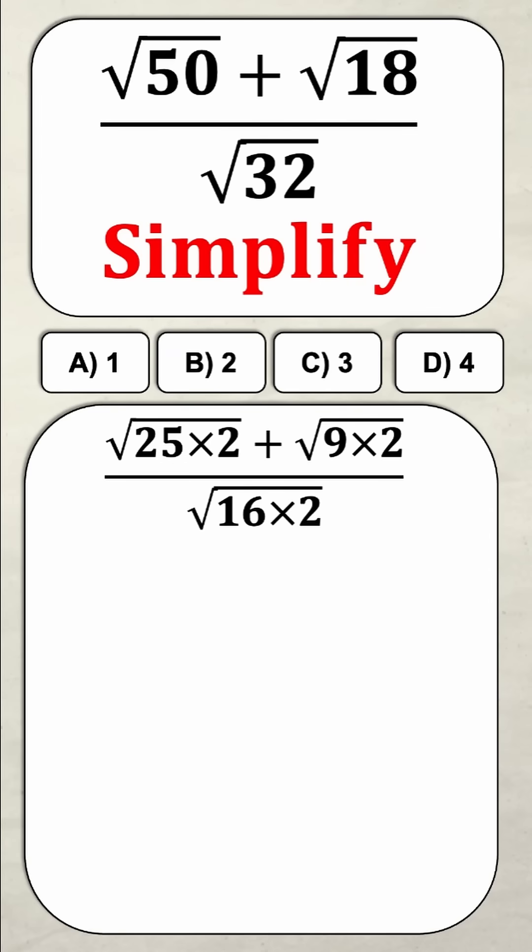Well now that I've got these products under each of the square roots I can actually apply the square root to them individually and it looks like this. So I have root 25 times root 2 plus root 9 times root 2 all divided by root 16 times root 2.